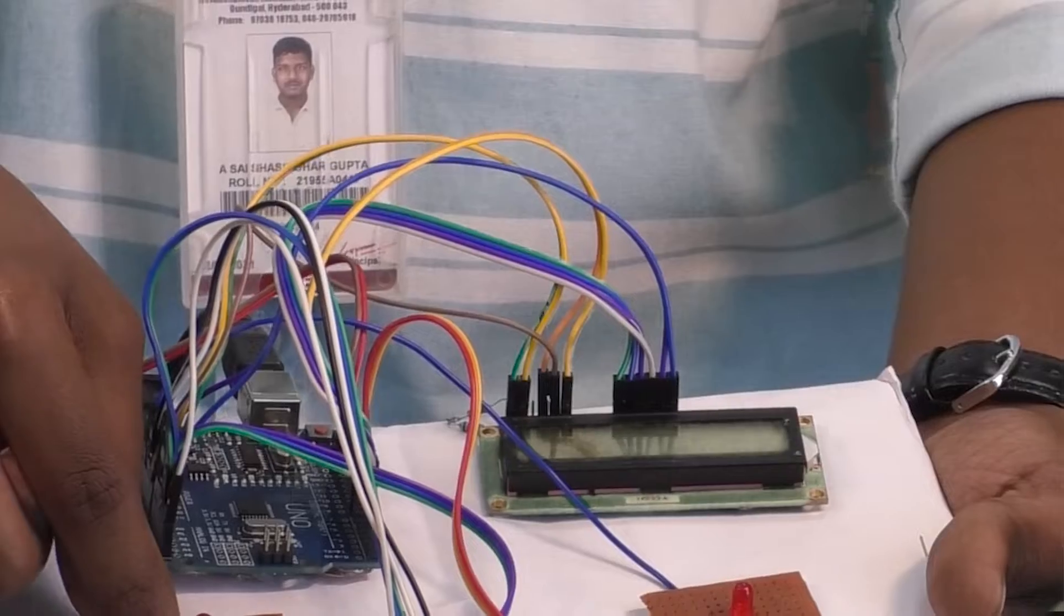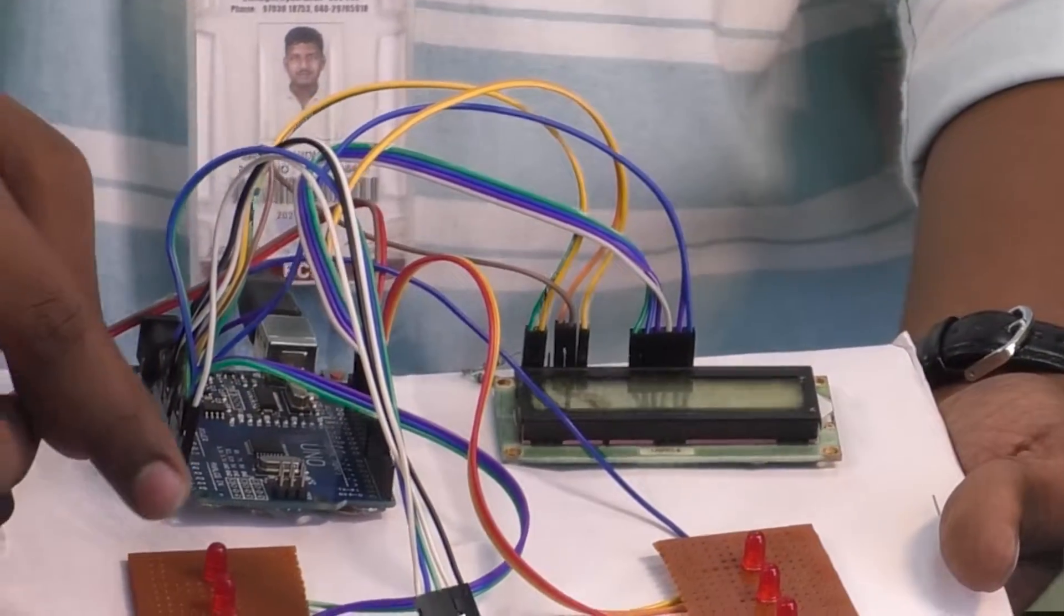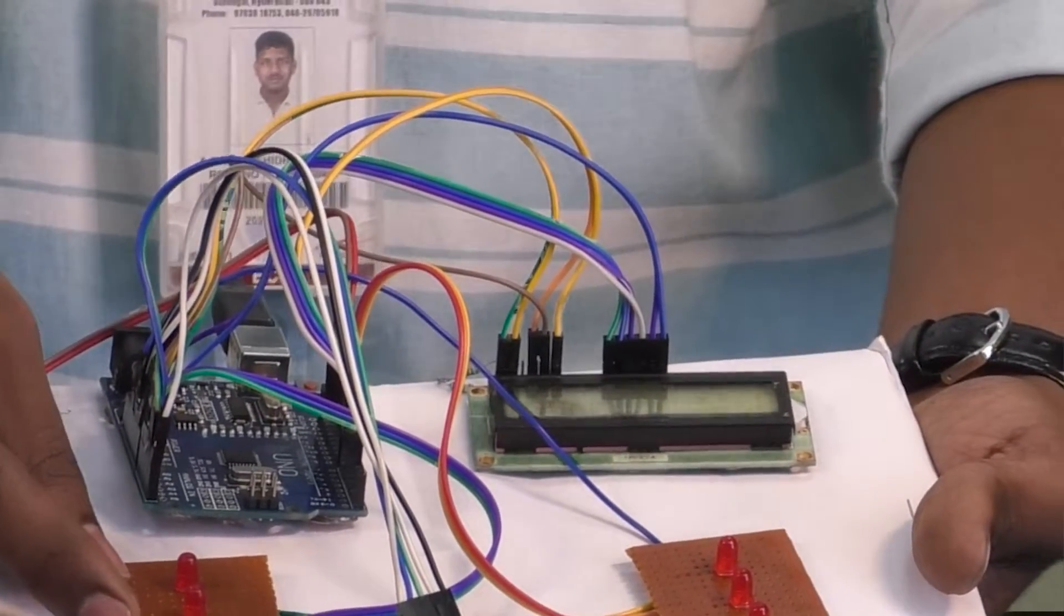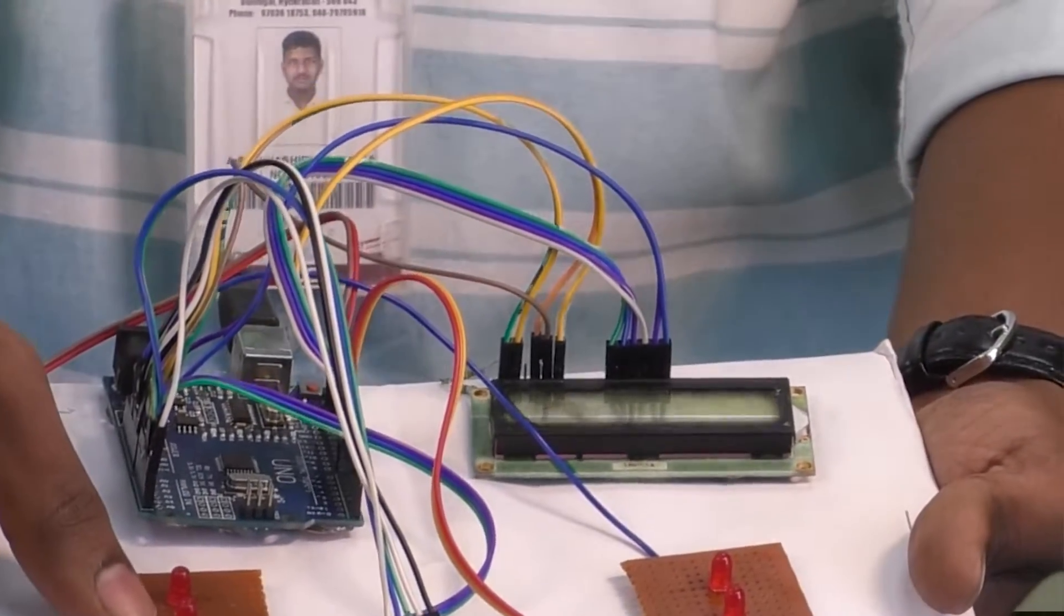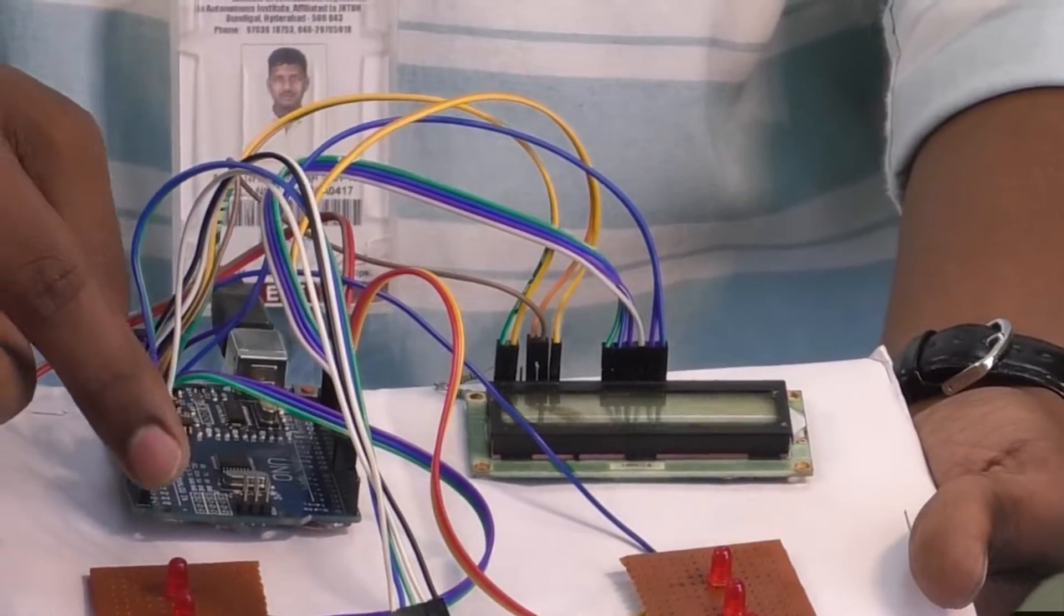So whenever the encoded value is less than or equals to 300, we are getting a left indicator section and whenever it is greater than or equals to 370, the right indicator section gets activated.